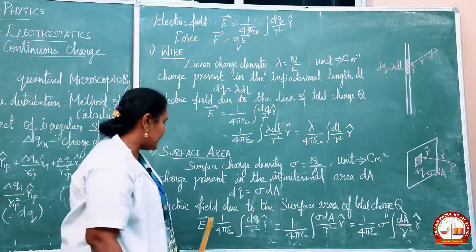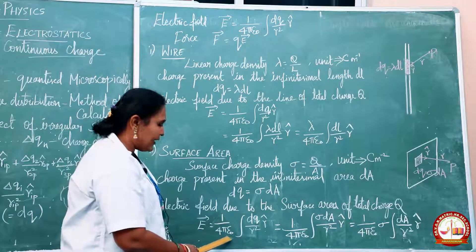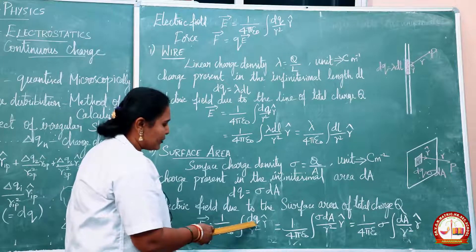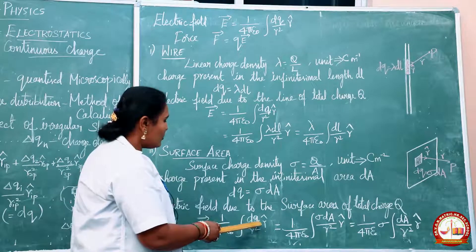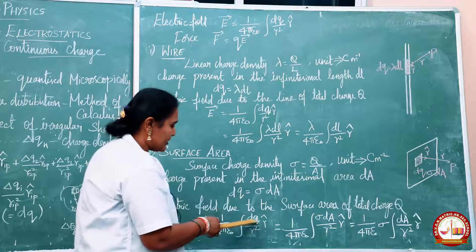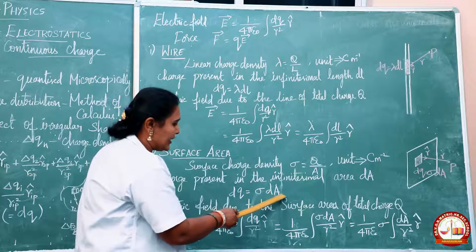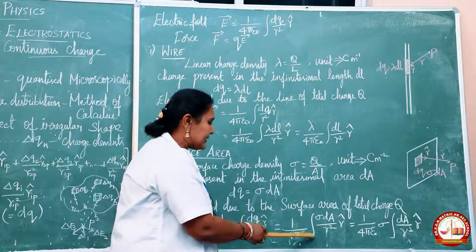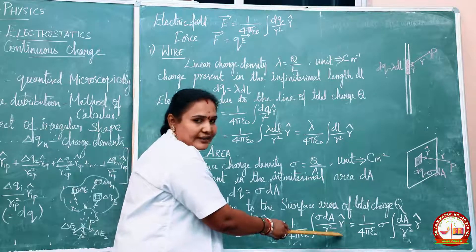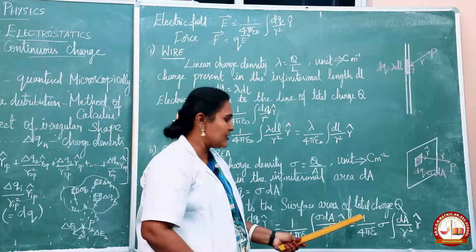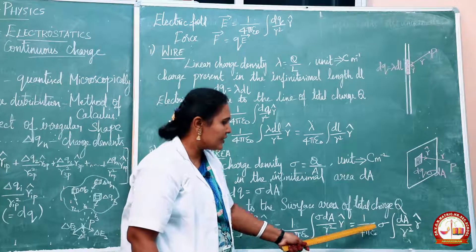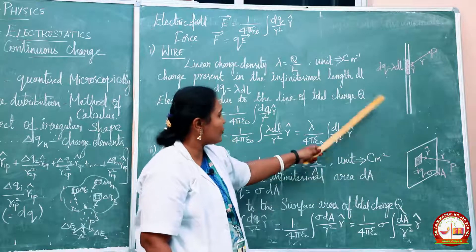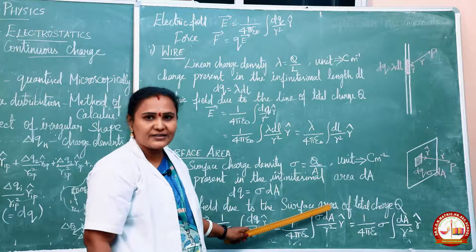The electric field due to the surface area of total charge Q: E vector is equal to 1 divided by 4πε₀, integral of dQ divided by R squared times R̂. Substituting dQ = σ dA and taking σ outside the integral: E vector equals 1 divided by 4πε₀, σ times integral of dA divided by R squared times R̂. The corresponding diagrams show the wire as well as the surface area.